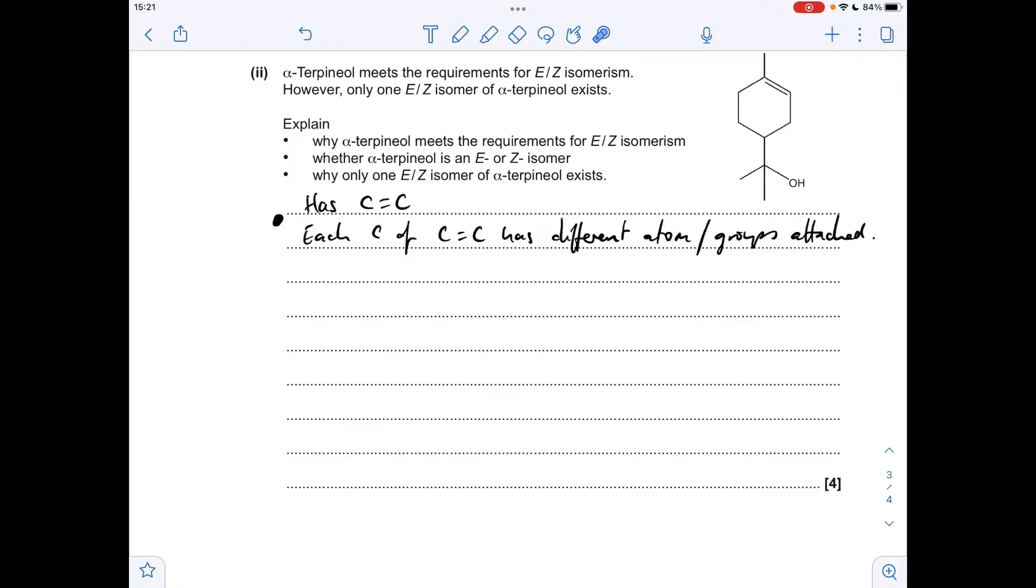Second bullet point now, so is this the E or the Z isomer? We've got to look at the carbons of the double bond and establish the priority groups on each carbon. So if we start with the right-hand carbon, this one here, we've got an H and a C, so obviously that's got a higher atomic number, so this has got priority. And then if we move on to this carbon, we've got carbons directly bonded to this carbon. So we've got to look at what's then bonded to the carbons.